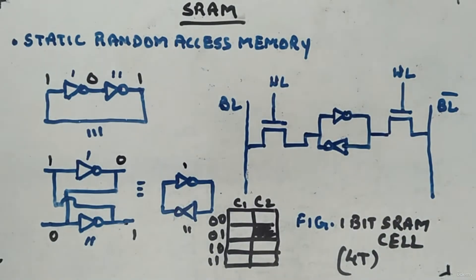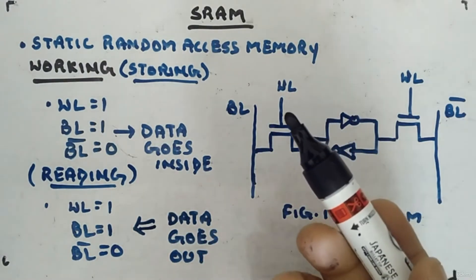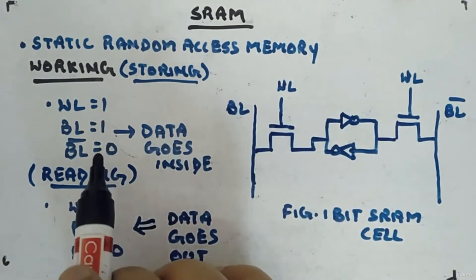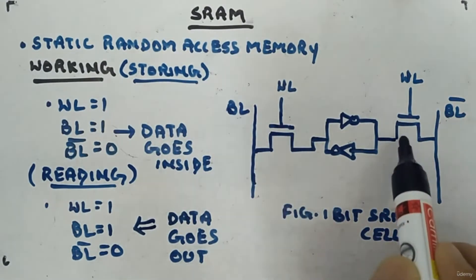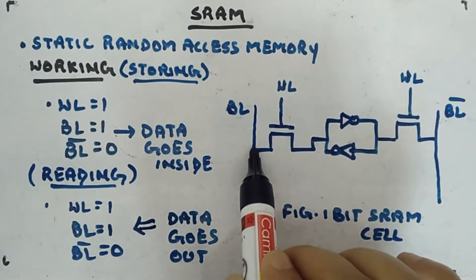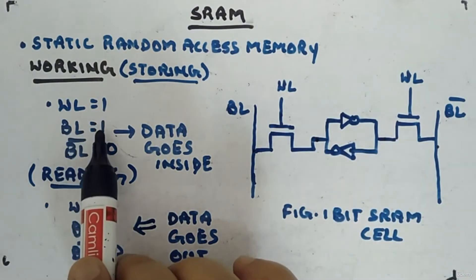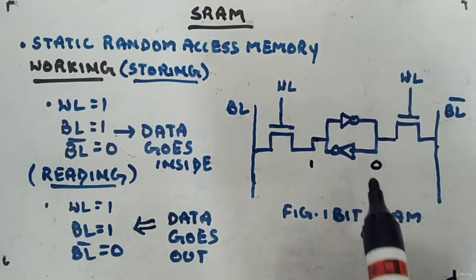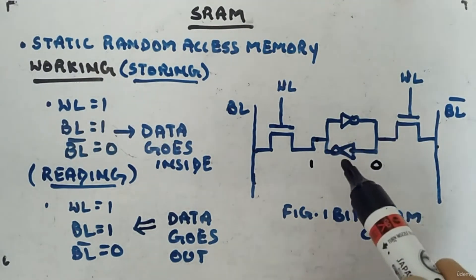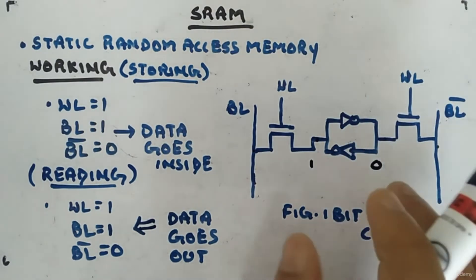Let me show you the working. To store data, you put logic high at the word line — this turns on the NMOS pass transistors, so whatever data you put on BL and BL bar comes into the cell. If BL is 1, then logic 1 appears on one side and its inversion, logic 0, is stored on the other side. That's how you write data into the cell.